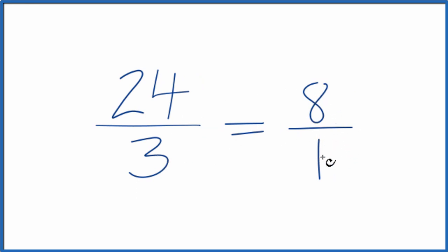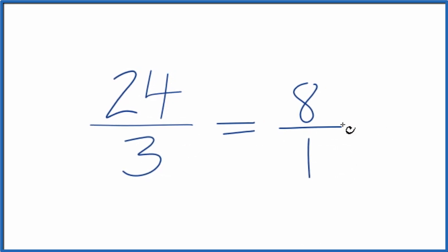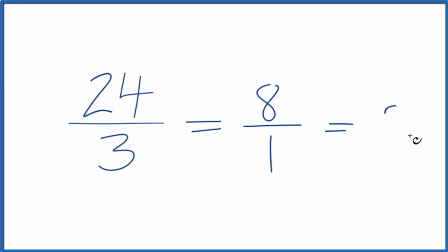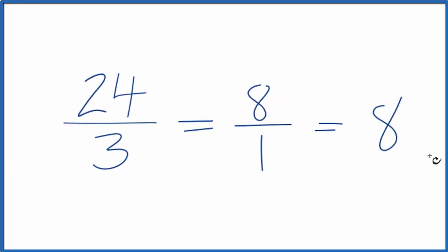So we have 8 over 1 as our simplified fraction for 24 thirds. And since 8 over 1 is just 8 divided by 1, we can call that 8, and that would be our answer.